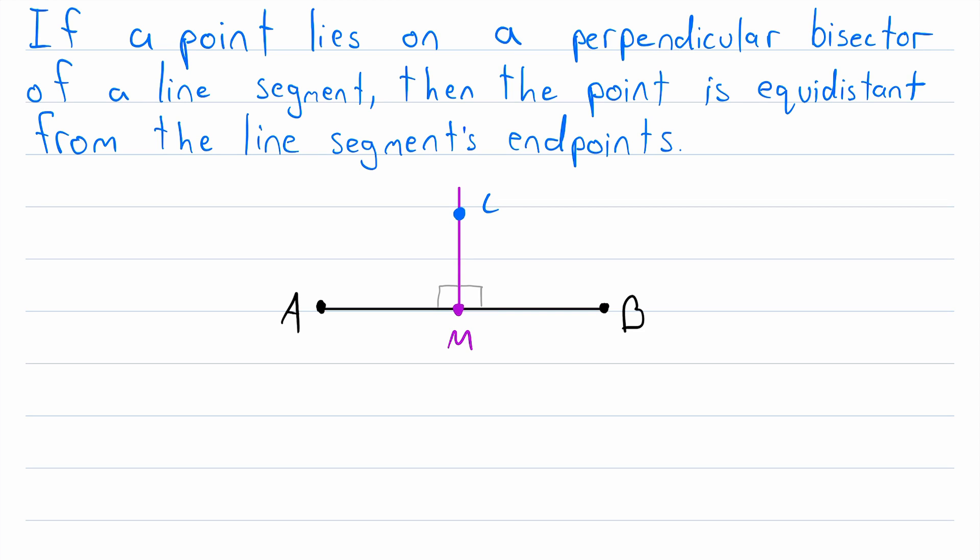A perpendicular bisector is just a line, line segment, or ray that intersects another line segment at its midpoint and intersects the segment at a 90 degree angle.